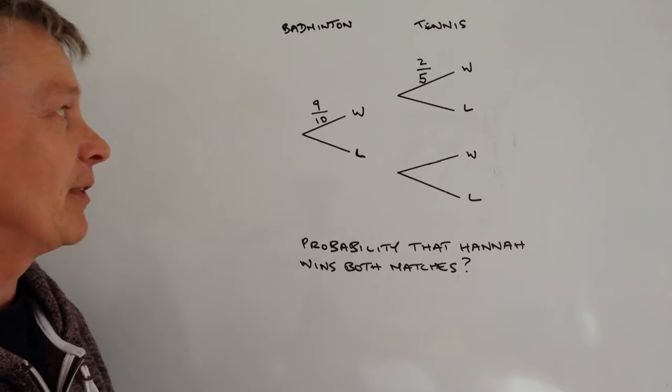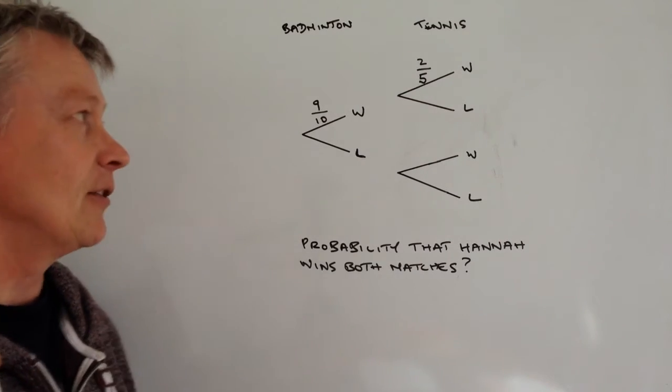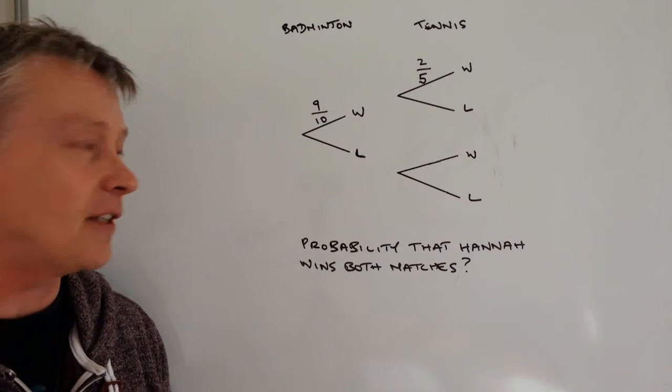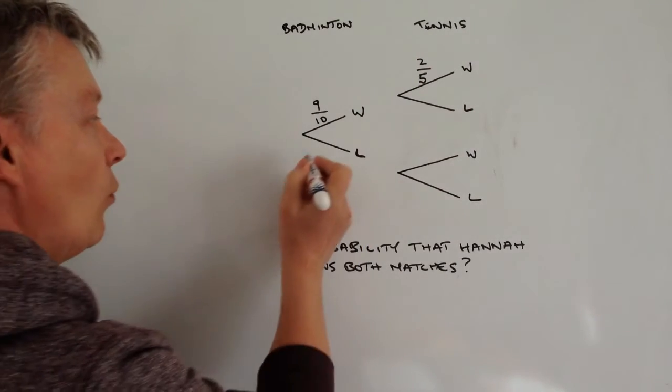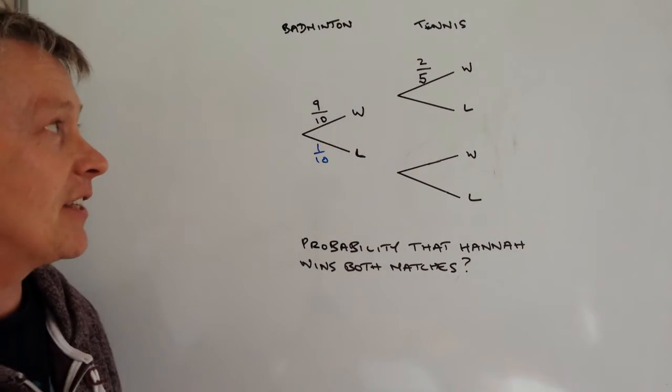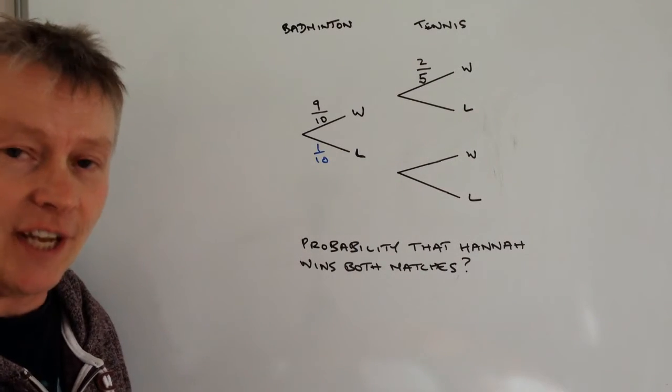Okay so we're going to complete this. Let's look initially at badminton. Well nine out of ten times she wins, so therefore one out of ten times she doesn't win, and then it's exactly the same with tennis.